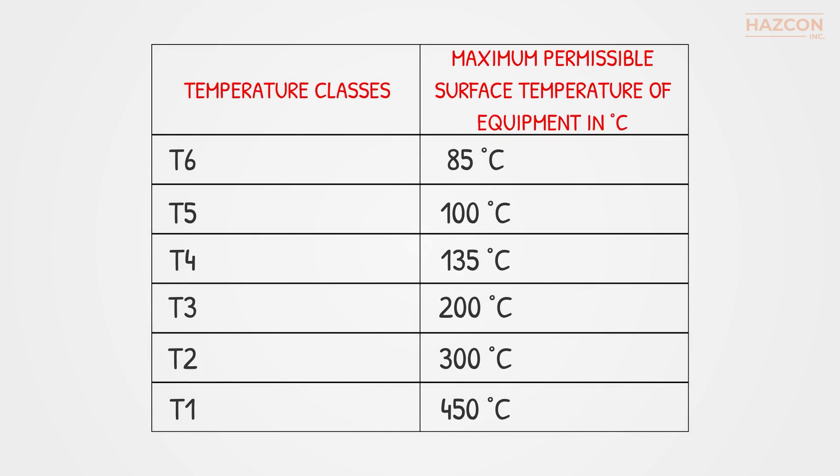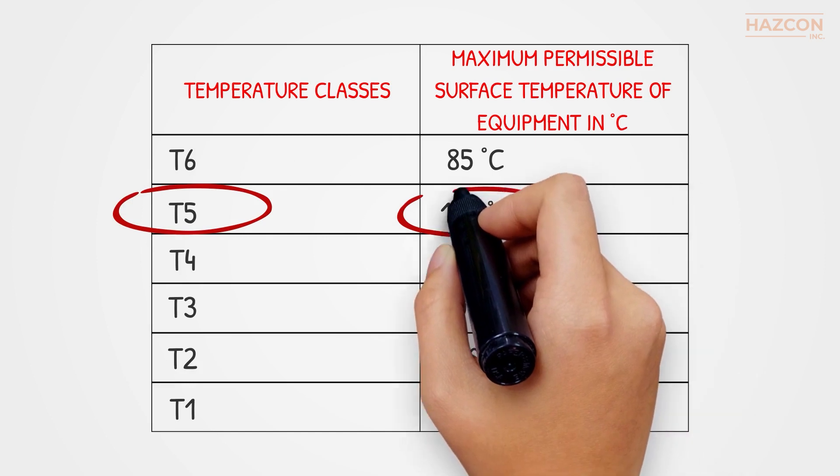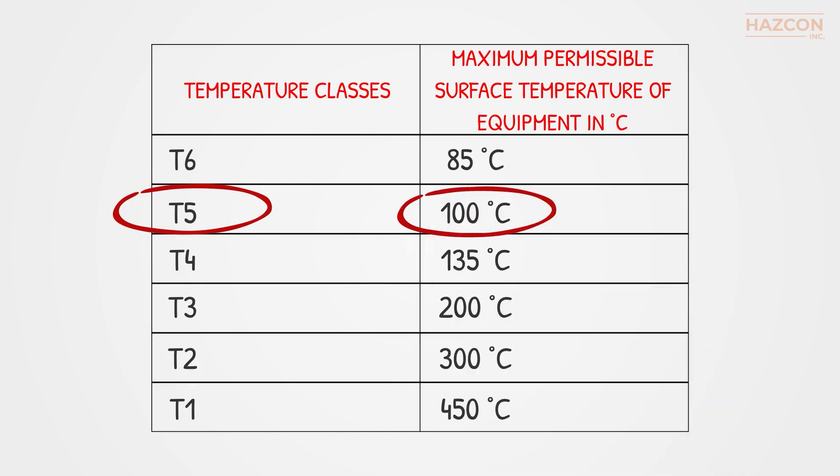What this table means is that a device classified as T5 will never retain a surface temperature higher than 100 degrees Celsius, which can be exposed to explosive atmospheres and cause an explosion.